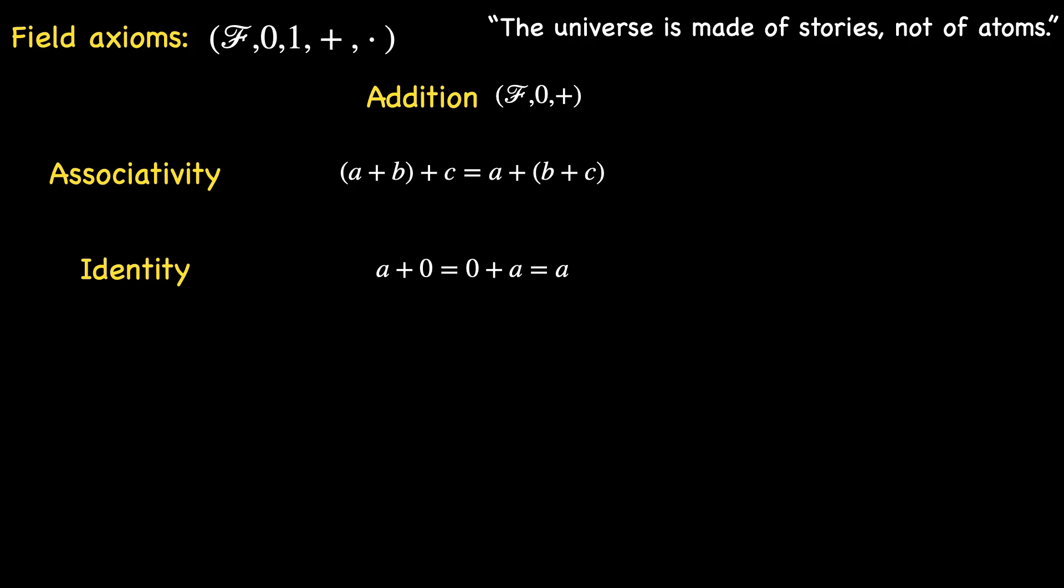Each member of F pairs up with an additive inverse, ensuring that for every A in F, there exists a B in F such that A plus B equals B plus A equals 0.